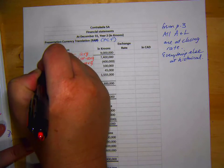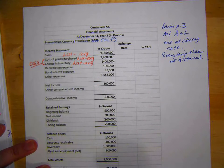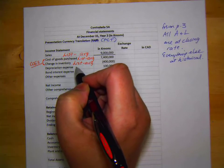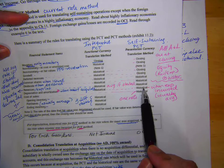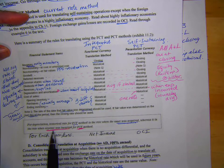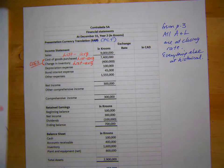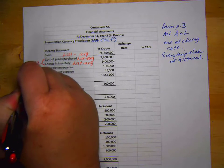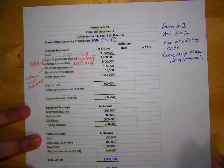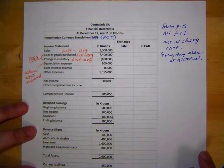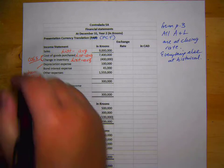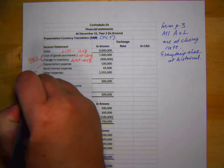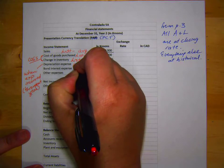Depreciation expense is an interesting one. Looking at page three, depreciation expense is historical — for PCT, that means when the expense was incurred. So when is depreciation incurred? We record it at year end, but depreciation actually happens throughout the year, so it's historical average. Bond interest expense is also average, and other expenses are average. They are all historical.